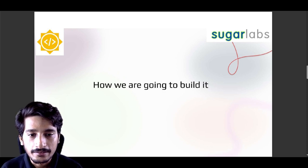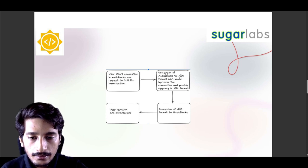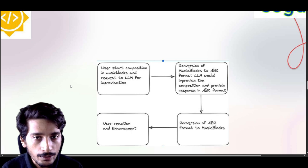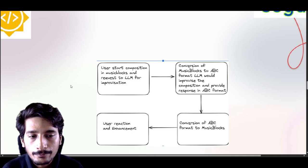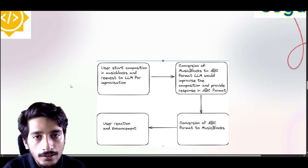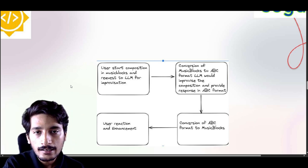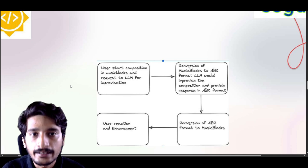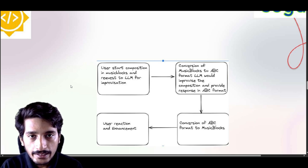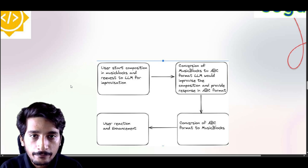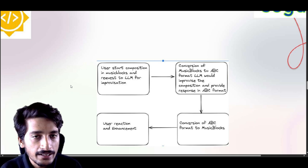So how are we going to build this feature? Here is the flowchart: the user starts a composition in music blocks and requests the LLM for improvisation, saying something like 'I want to improve this harmony, would you improve it?' The LLM is trained on ABC format, so the music blocks need to be converted to ABC format. Once converted, the LLM improvises and completes the harmony, giving the response in ABC format. We then convert that ABC back into music blocks and show it to the user. There is also a feedback loop where the user can provide feedback or enhancement requests to help the LLM improvise further.